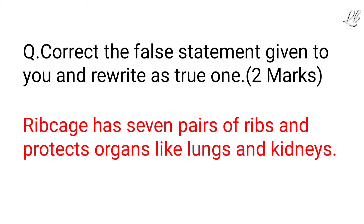Correct the false statement given to you and rewrite it as a true one. You have not told the child which words are wrong in this statement. The statement is: 'Rib cage has seven pairs of ribs and protects organs like lungs and kidneys.' For this, the child needs thorough knowledge about the rib cage and its functions. So the correction is: rib cage has 12 pairs of ribs and it protects organs like lungs and heart — not kidneys. The child should know that kidneys are at a lower position in our body.